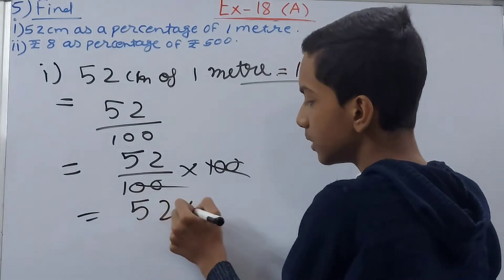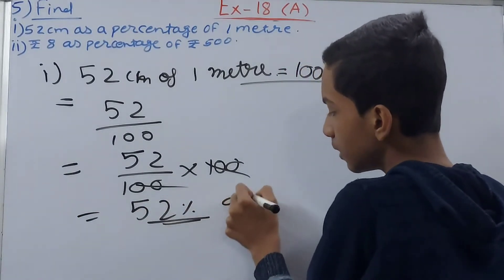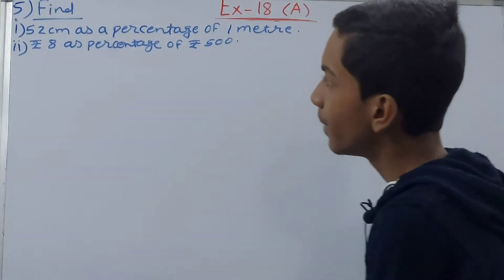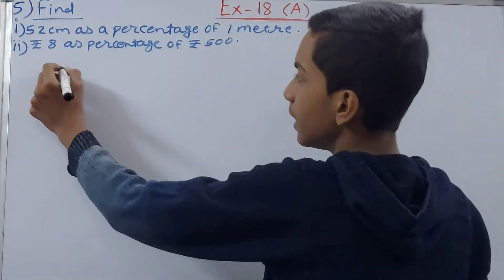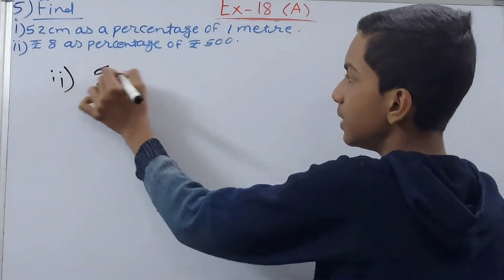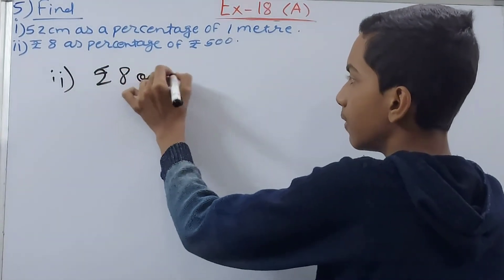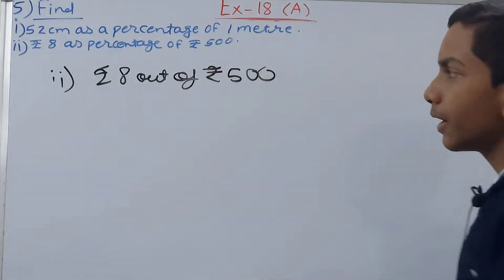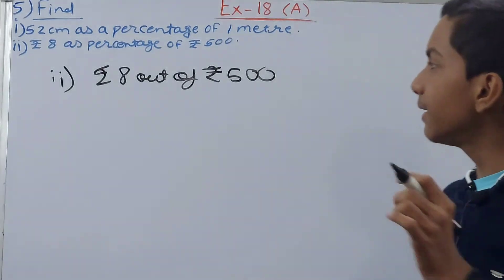Now let's see what is the next one. The second part. What have you got here? 8 rupees as a percentage of 500. So rupees 8 out of rupees 500, this we can say.